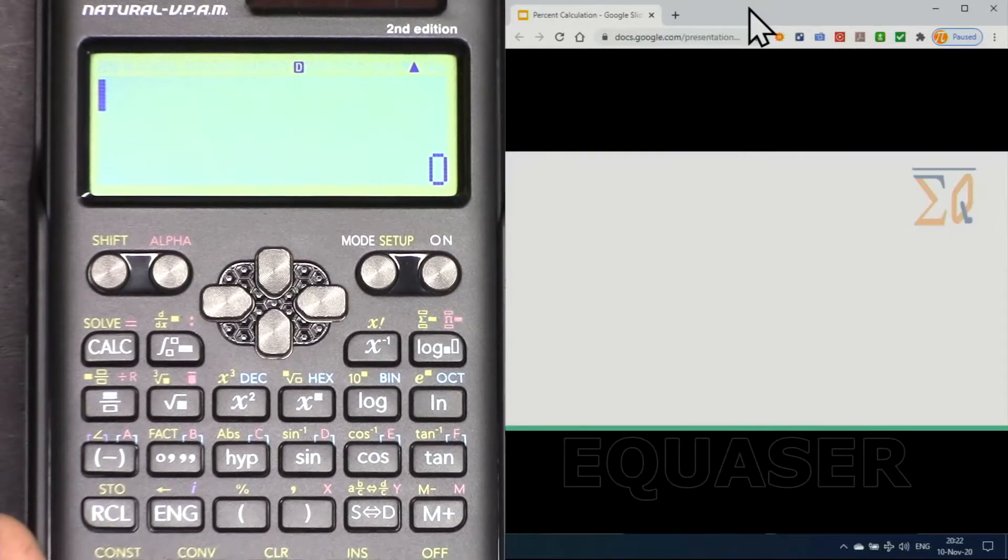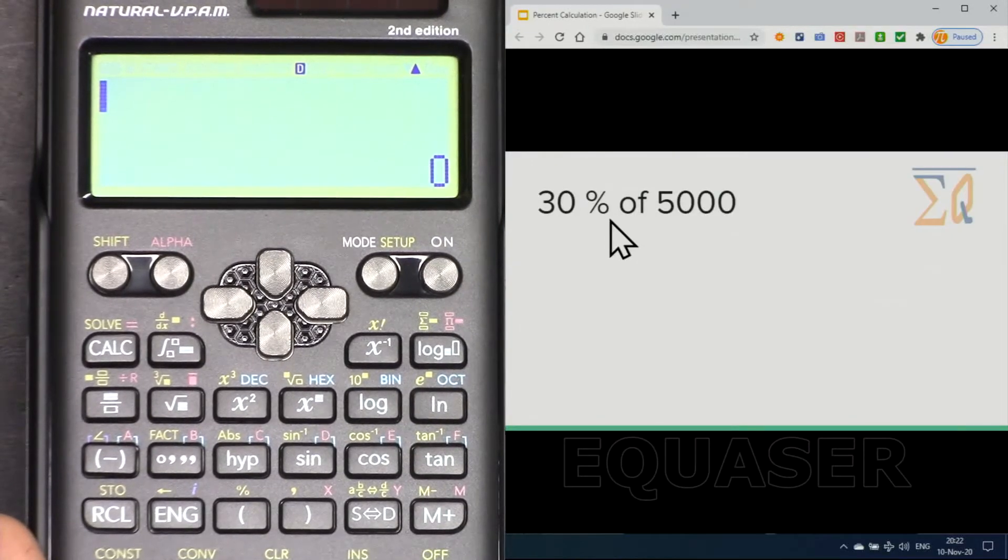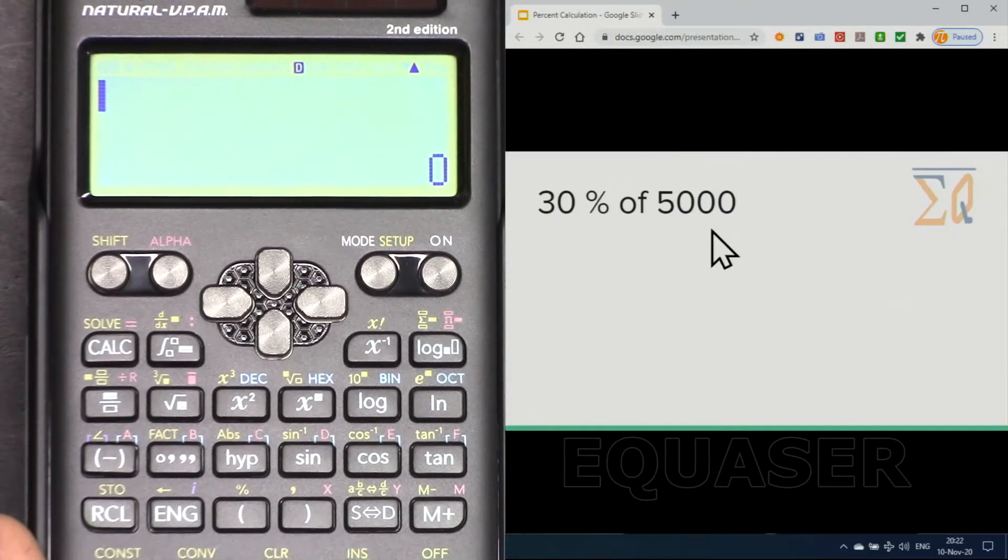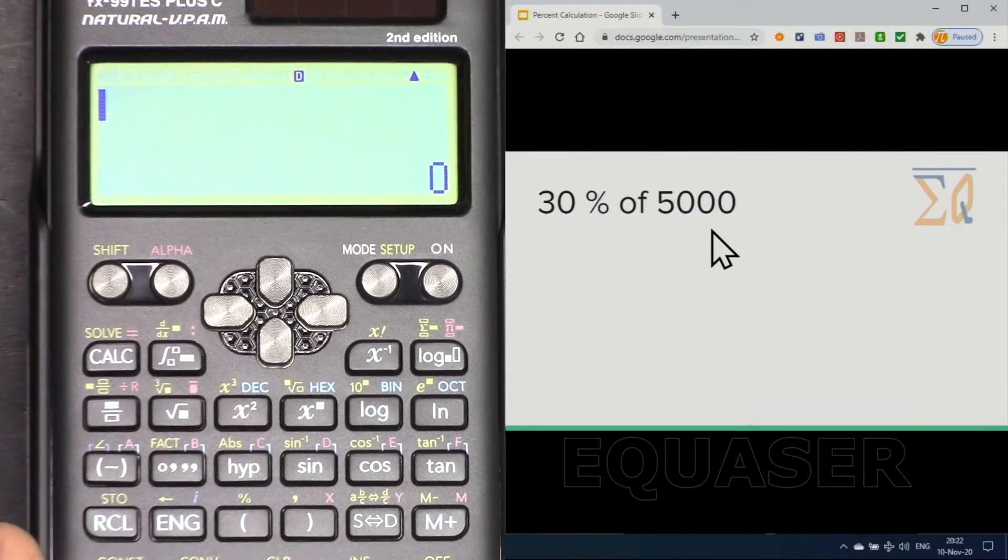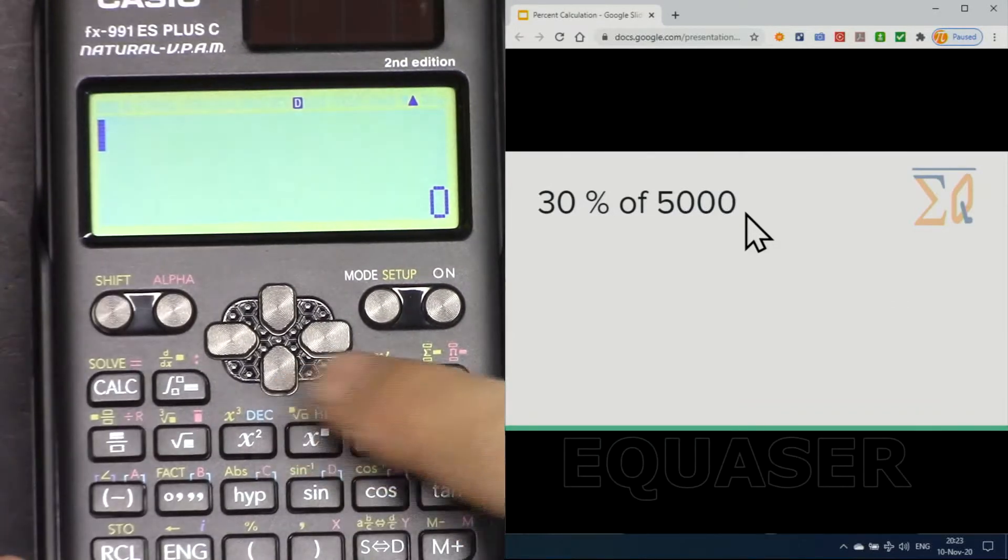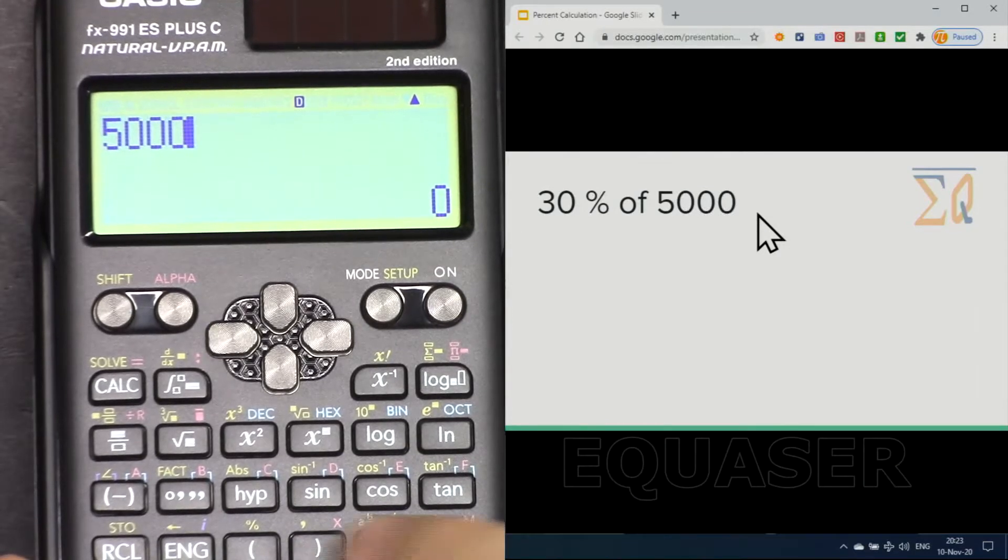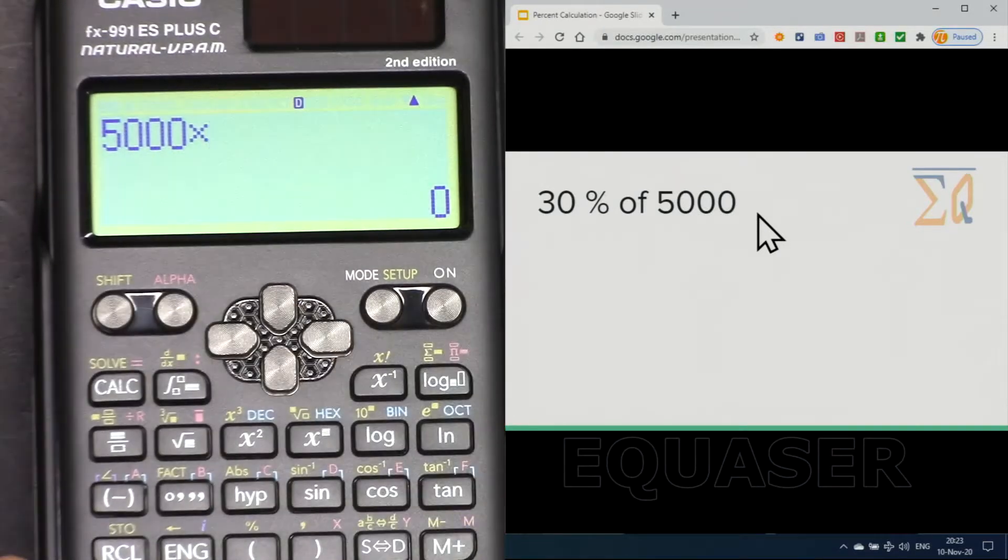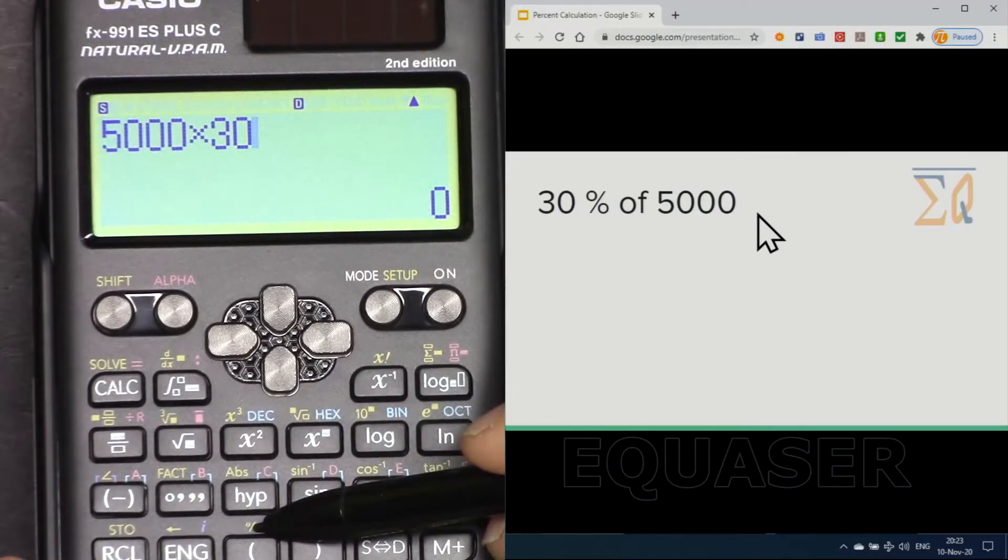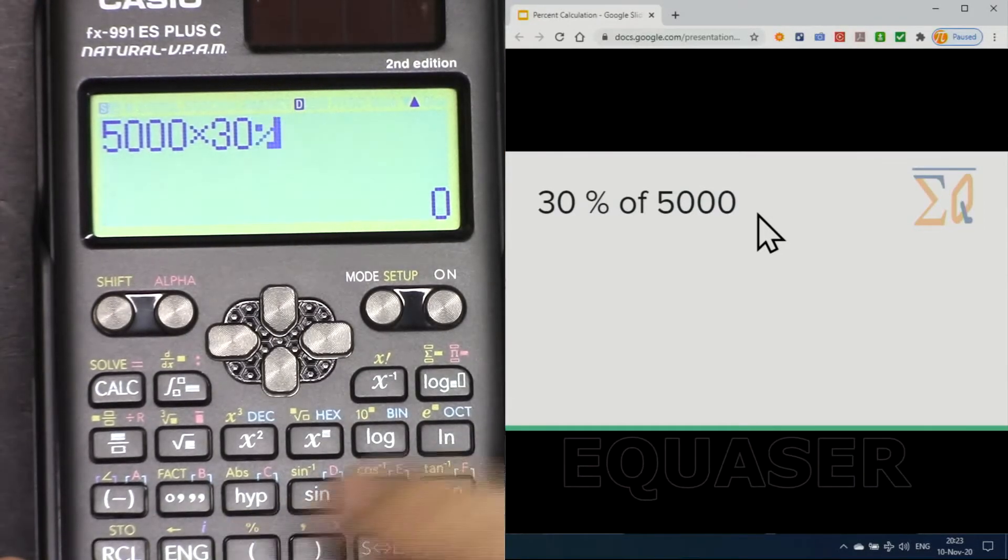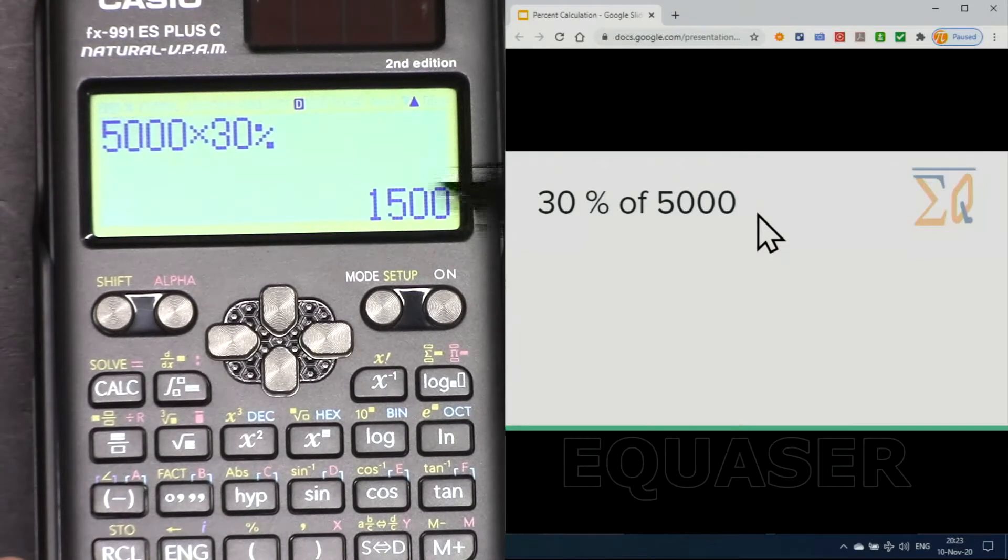When we do percent calculation, usually like this: what is 30% of 5000? Let me do that. We enter 5000 first, multiply by 30, and then shift. We press this percent, which is opening parenthesis. 30%, and it gives you the answer, which is 1500.